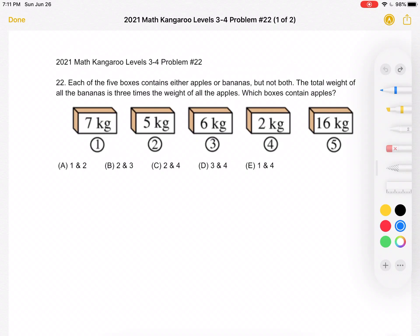This is the 2021 Math Kangaroo Levels 3-4, Problem Number 22. Each of the five boxes contains either apples or bananas, but not both. The total weight of all the bananas is three times the weight of all the apples. Which boxes contain apples?